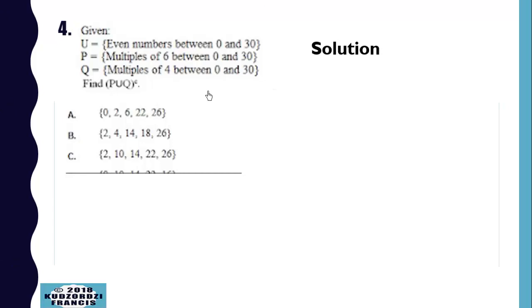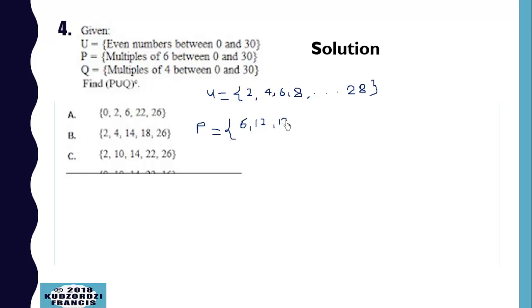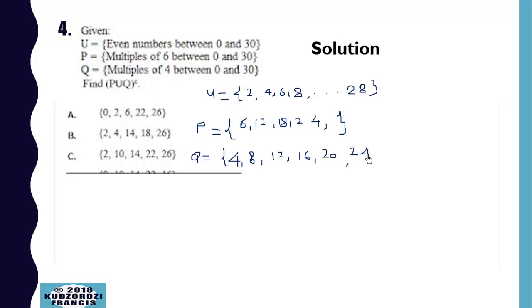Now we list the elements of the sets. Set U has elements 2, 4, 6, 8, and so on up to 28. Then P is equal to multiples of 6: 6, 12, 18, 24. Then Q has multiples of 4: 4, 8, 12, 16, 20, 24, 28.